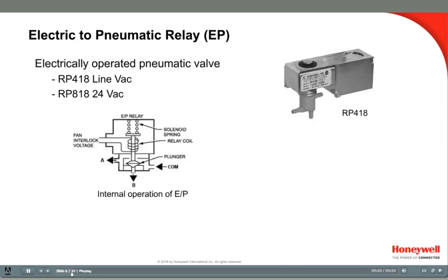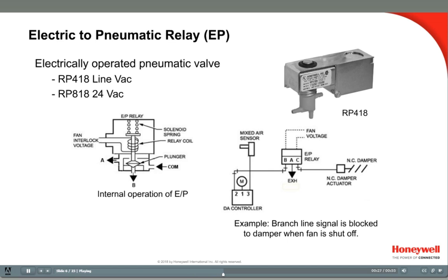A common relay is an electric-to-pneumatic relay, often referred to as an EP. It is an electrically operated solenoid connected to a 3-way air valve with a common port and a normally open and a normally closed port. When the solenoid is energized, the plunger moves the air valve to be open from the common port to the B port. When it is de-energized, a spring holds the valve open from the common port to the A port. The valve is often used as a pneumatic on-off valve controlled by either 24 volts or a line-volt electric signal.